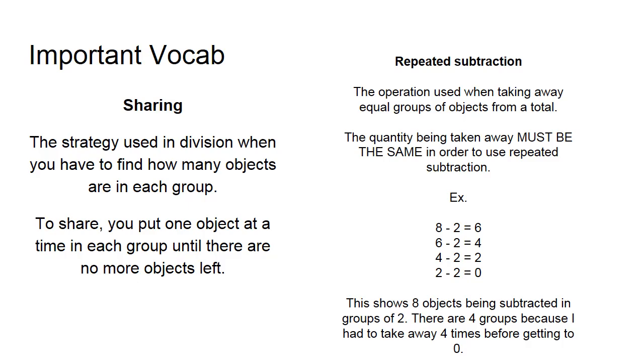The example I give is 8 minus 2 equals 6, 6 minus 2 equals 4, 4 minus 2 equals 2, and 2 minus 2 equals 0. I had 8 at the beginning and took away groups of 2 until I had none left. I had to do this 4 times before I got to 0, meaning that I have 4 groups of 2 objects in each group.